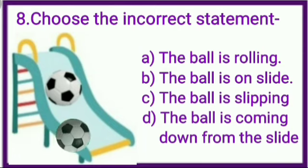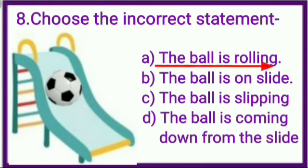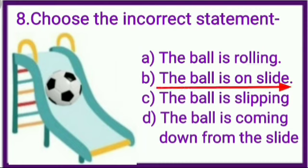So for answer, we have 4 options. Option A: The ball is rolling. It is a correct statement. Option B: The ball is on slide. It is also a correct statement.